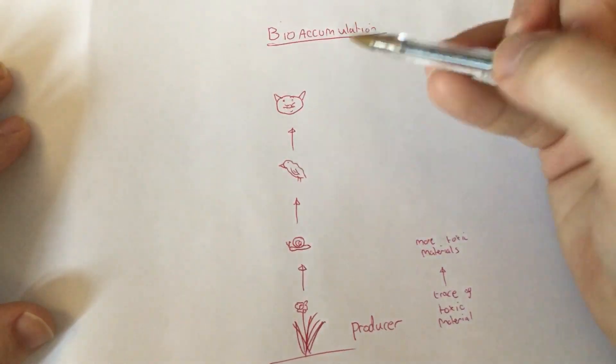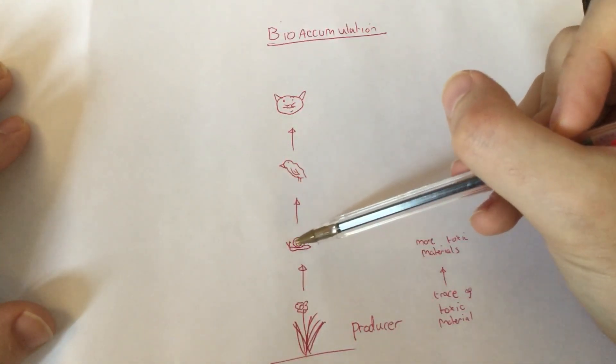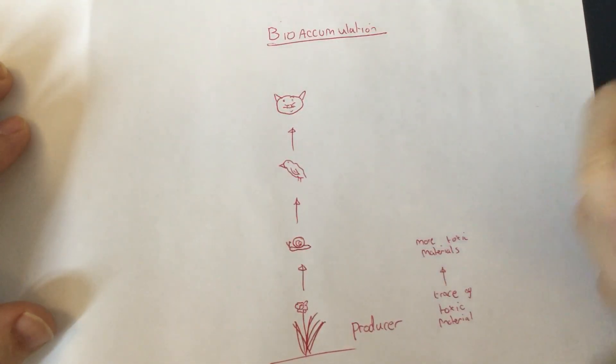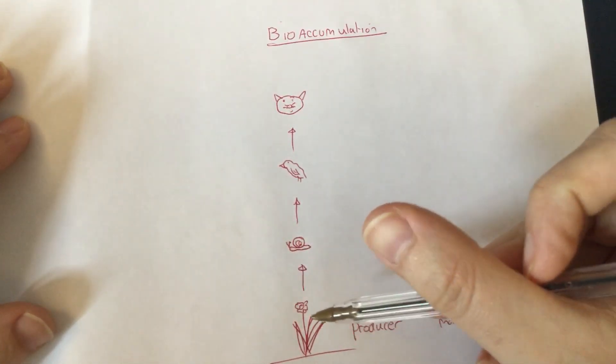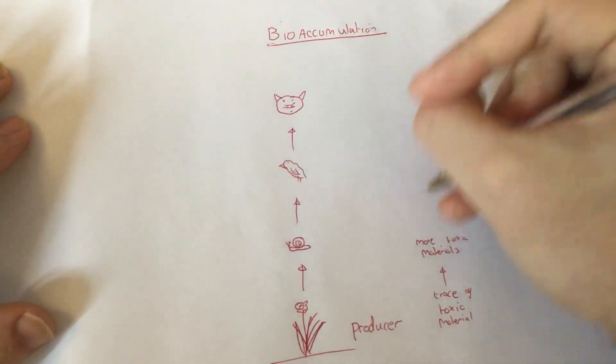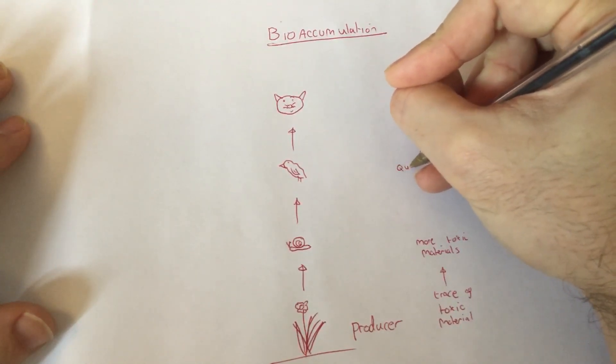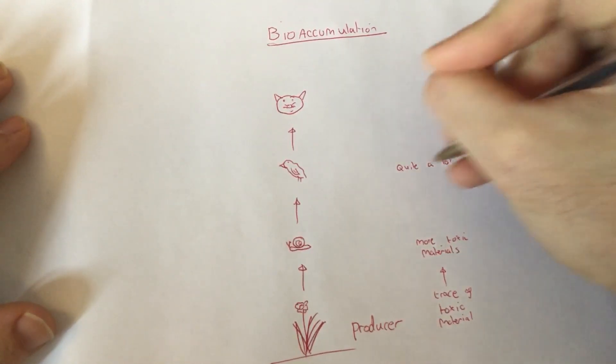And again, the same happens. The birds come along and they eat the snails. And because they're eating the snails, they're building up the toxins in their body as well, which are more concentrated in the snails than it is in the flower down here. So suddenly we have quite a lot of toxic material.